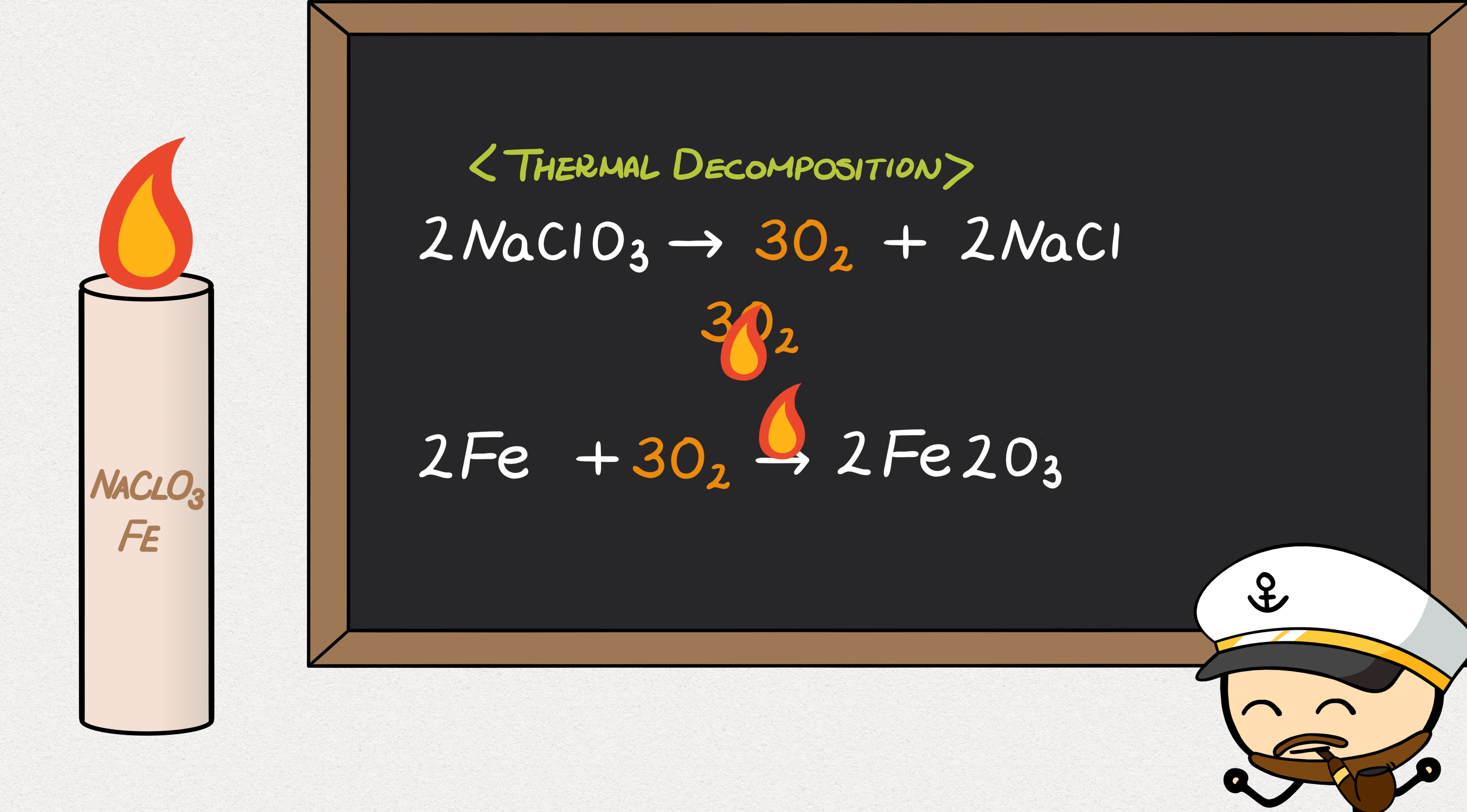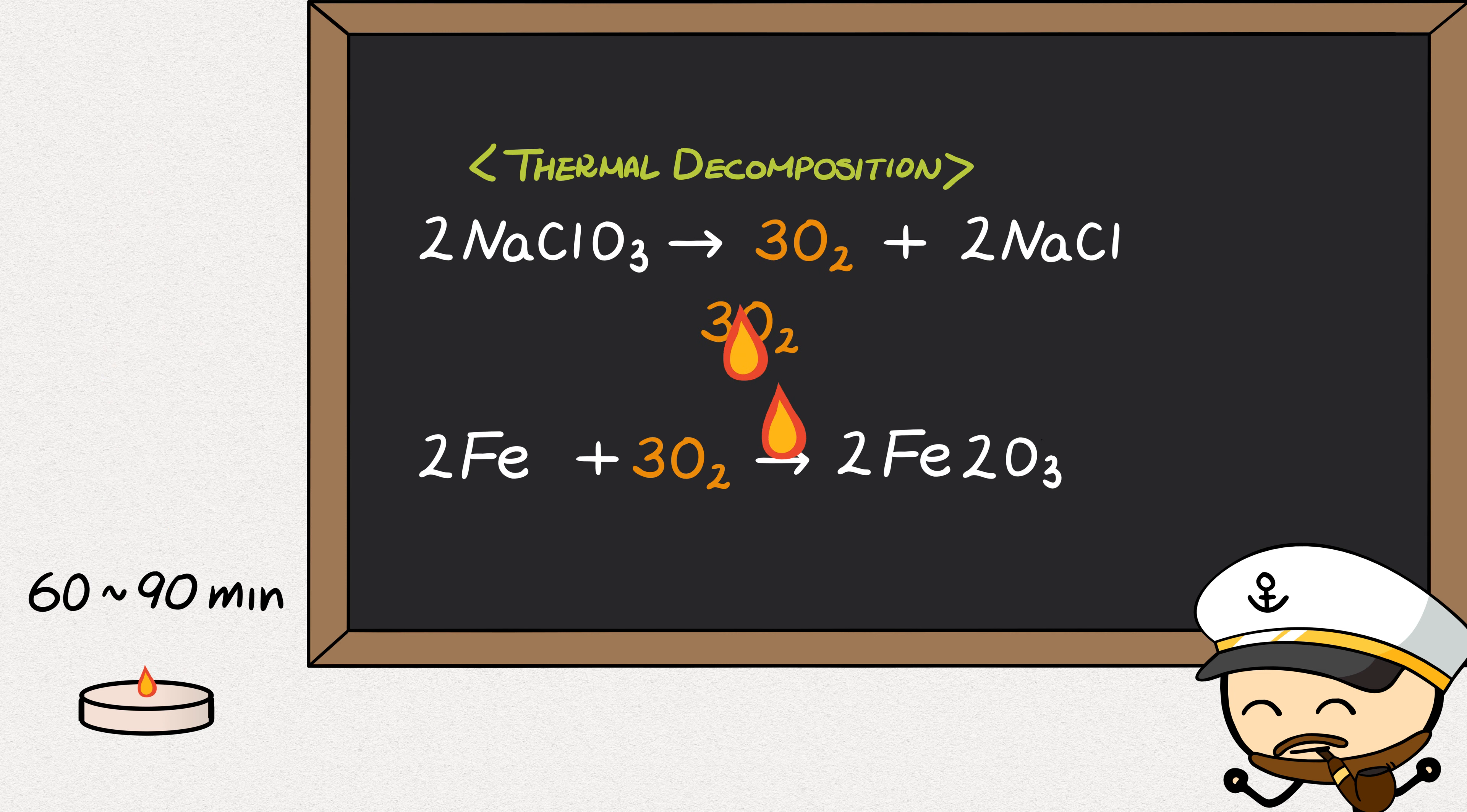So the candle doesn't take any oxygen away from the air, but rather uses what's provided by the candle itself. This process will continue until the candle burns out, which will take about 60 to 90 minutes for a typical candle, during which it will release about 2,600 liters of oxygen. For a crew of 100, that's about an hour's worth of oxygen.